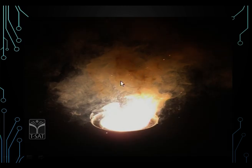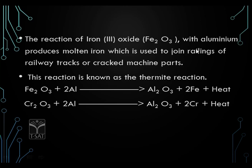The heat liberated is so high that the metal comes out in molten state. In the reaction of iron oxide, more reactive aluminium displaces less reactive iron from iron oxide. This process is so exothermic that it liberates enough heat to even melt the iron being extracted. Mainly, iron oxide with aluminium produces molten iron, which is used in iron railings of railway tracks or cracked machine parts. This reaction is known as the thermite process.